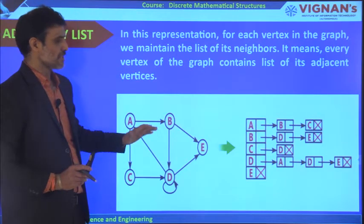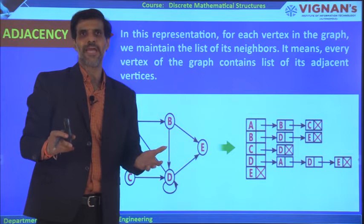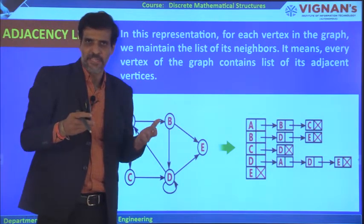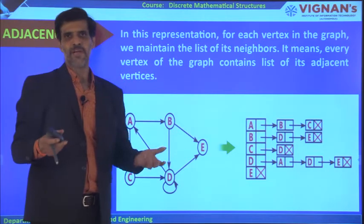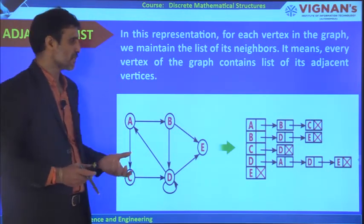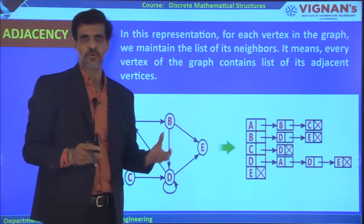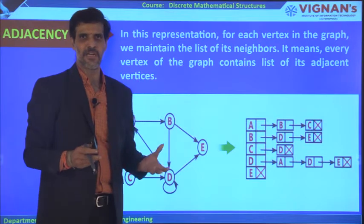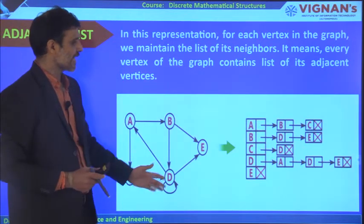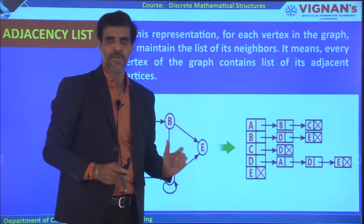When representing a graph as an adjacency matrix, we use arrays to implement it. When representing as an adjacency list, we use linked list representation — single linked list or double linked list — which is taught in data structures. These are the two main ways of representing a graph in computer memory.